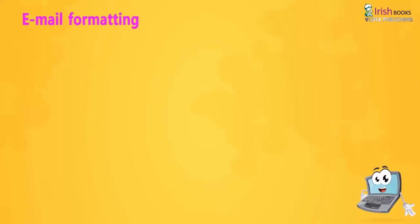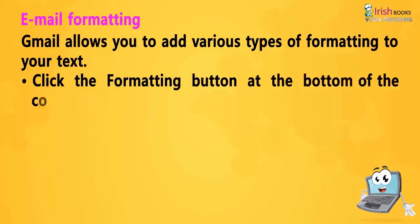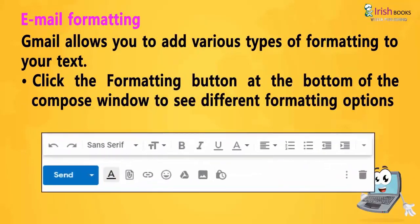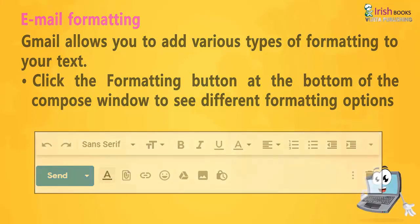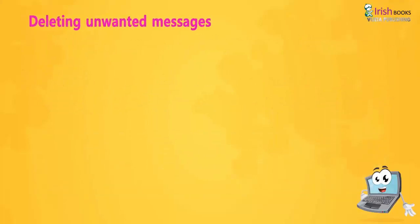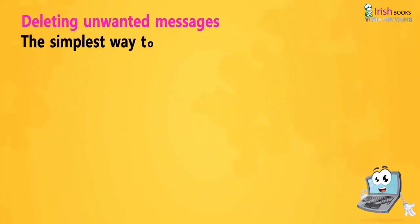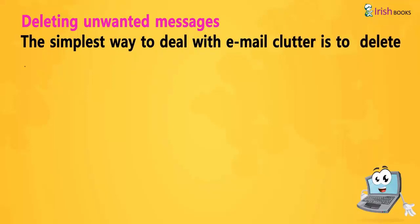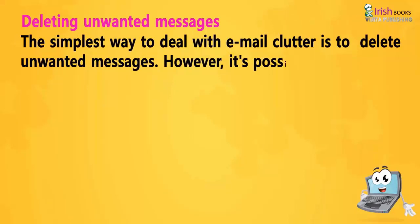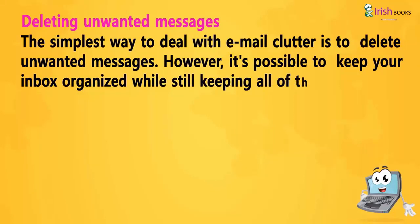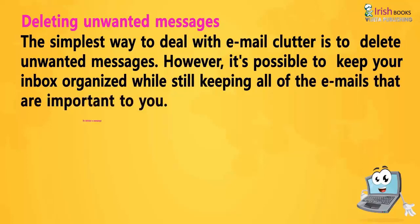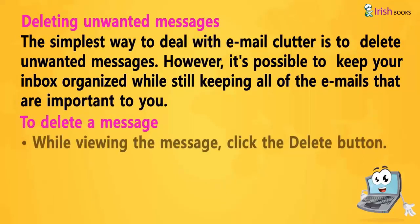Email Formatting: Gmail allows you to add various types of formatting to your text. Click the formatting button at the bottom of the compose window to see different formatting options. Deleting unwanted messages: The simplest way to deal with email clutter is to delete unwanted messages. It is also possible to keep your inbox organized while still keeping all emails that are important to you. To delete a message, while viewing the message, click the Delete button.